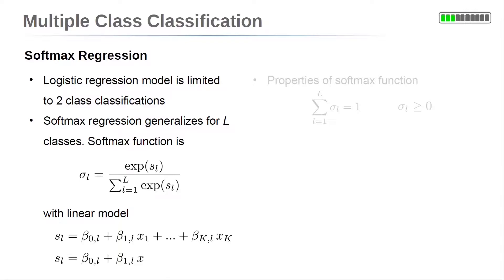Softmax regression can deal with an arbitrary number of L classes. The softmax regression uses the softmax function. This function is defined by the exponential function of a linear model, denoted by s, normalized by the sum of all classes of this exponential expression.